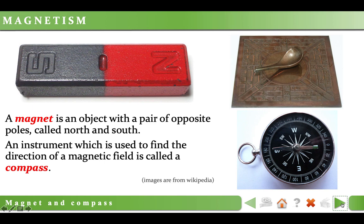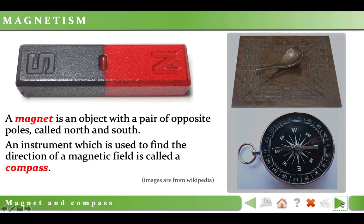A magnet is an object with a pair of opposite poles, called north and south poles. They point towards the Earth's magnetic poles, so that sailors and navigators rely on them to determine their directions. A magnet so used is called a compass.